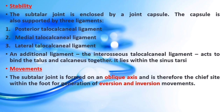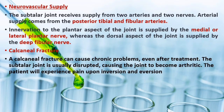Movements. The subtalar joint is formed on an oblique axis and is the chief site within the foot for eversion and inversion movements. Eversion is produced by muscles of the lateral compartment of the leg; inversion by the tibialis anterior. The subtalar joint has no role in plantar or dorsiflexion of the foot. Neurovascular supply comes from the posterior tibial and fibular arteries. Innervation of the plantar aspect is by the medial or lateral plantar nerve, while the dorsal aspect is supplied by the deep fibular nerve.